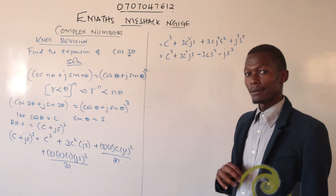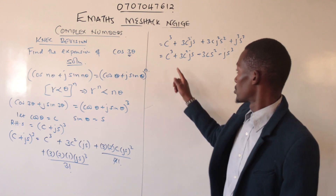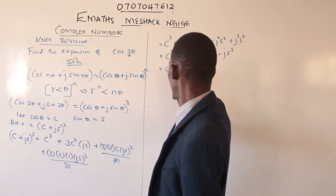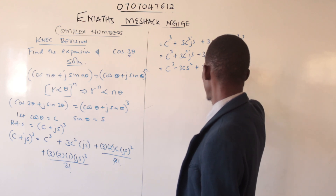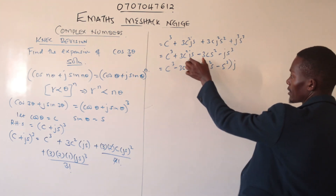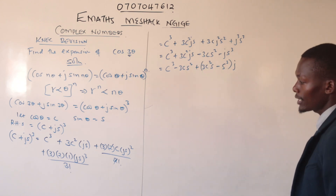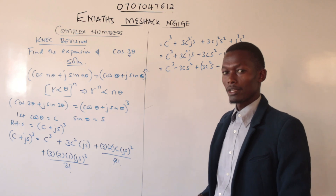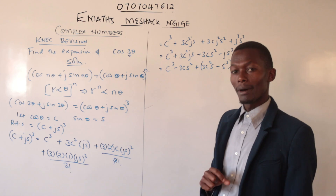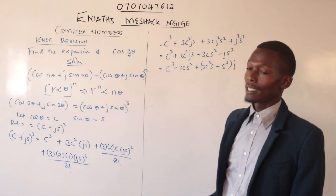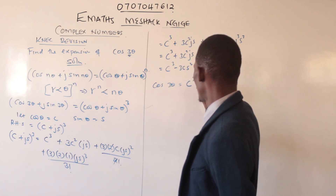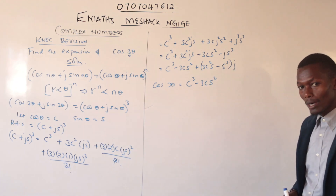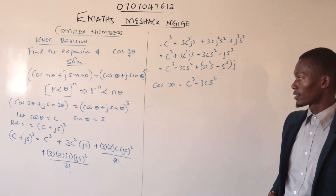Now we collect real terms and imaginary terms together. Real terms do not contain j; imaginary parts have a j. So the real part is c³ minus 3cs², and the imaginary part is 3c²s minus s³, with j factored out. Since the cosine function always belongs to the real part, we equate: cos(3θ) = c³ − 3cs².